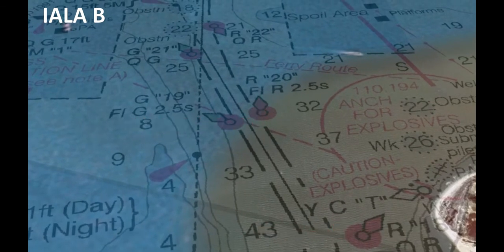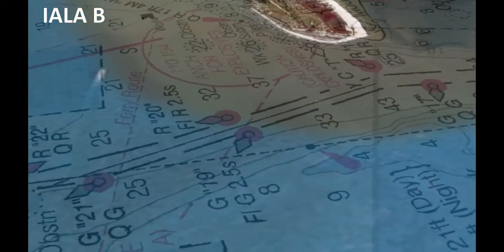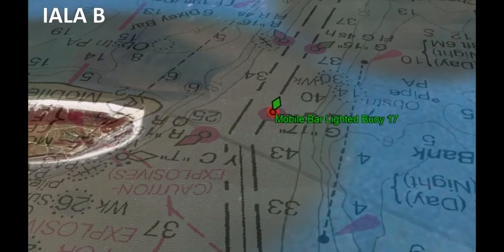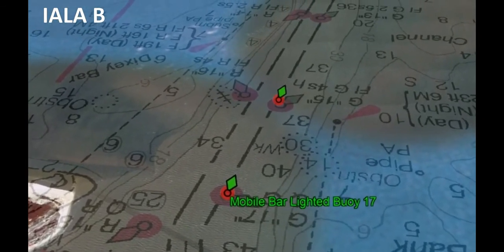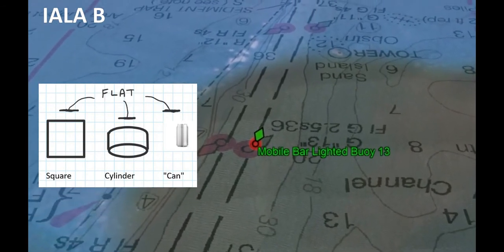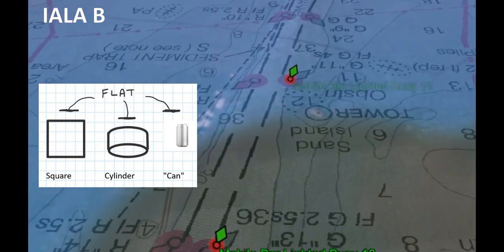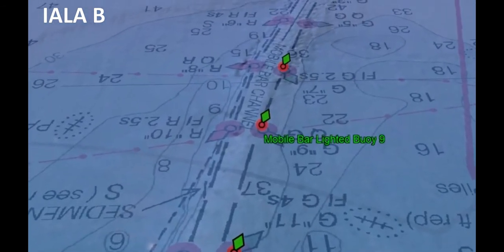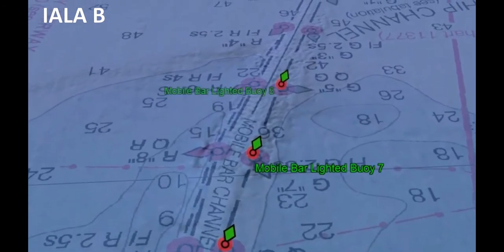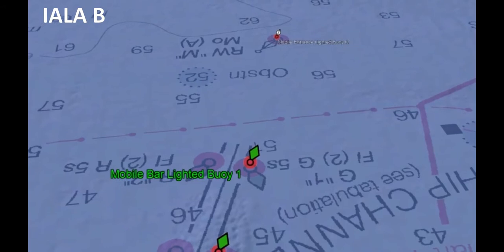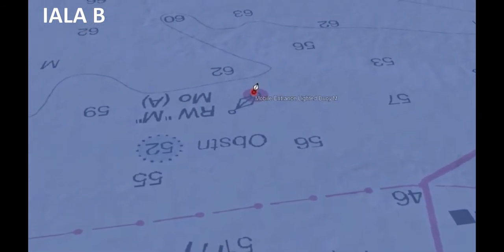Let's turn around and define the outbound situation — now you're headed to sea. Looking at the right side in an outbound situation in System B, you're going to see the color green: green buoys, green lights, green day marks. For shape, you're going to see flat tops — a cylinder shape for buoys, known as cans, and square day shapes. Numbering on the right side outbound is going to be decreasing and the numbers are going to be odd. As you get to the final gate — that's a pair of buoys — the green buoy is going to be buoy number one descending.